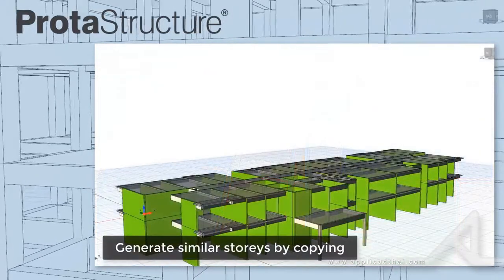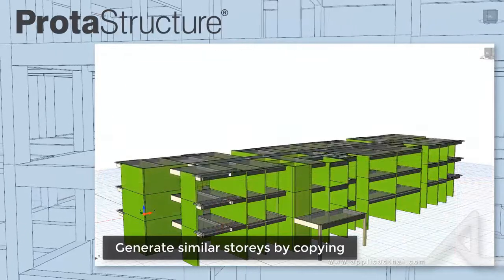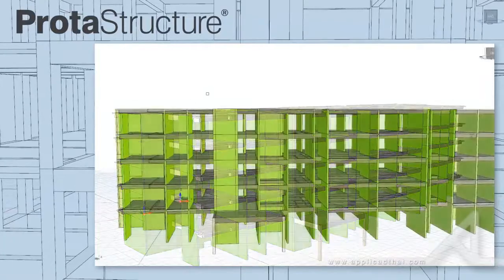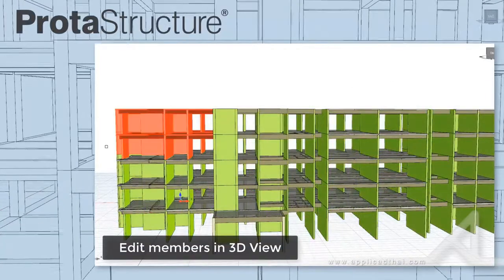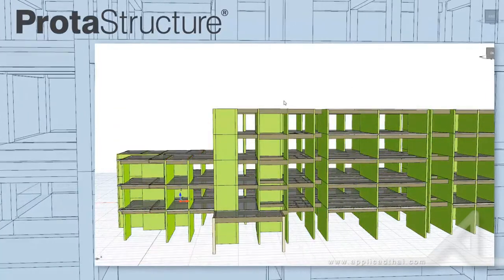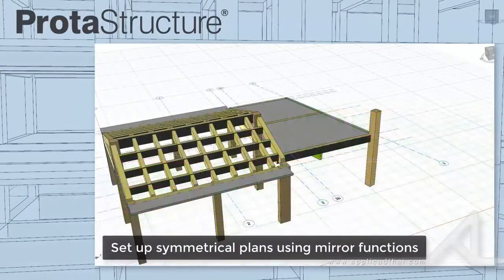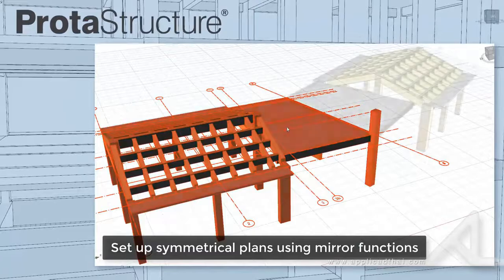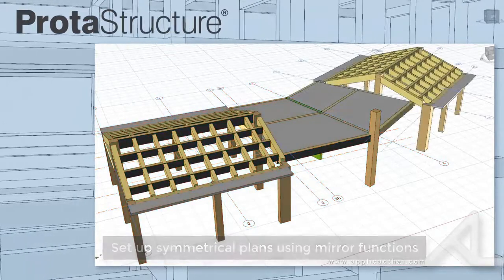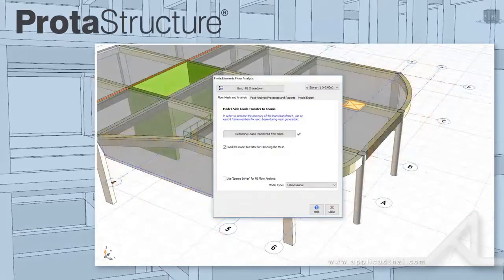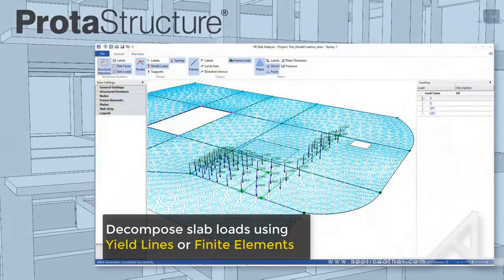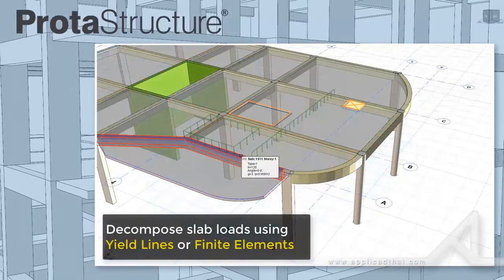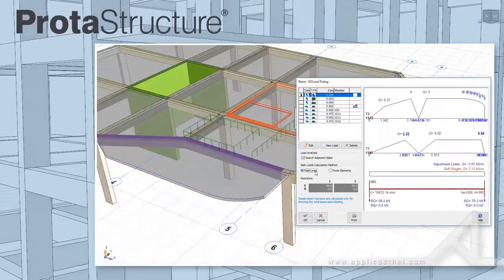Generating similar stories by copying the source story couldn't be easier. At any time, you can go back and edit the generated stories individually if you wish. Setting up symmetrical plans is also a breeze using mirror functionality. PROTA STRUCTURE uses intelligent yield lines or finite elements to accurately decompose slab loads to frames. Slab openings, line or patch loads are all considered.